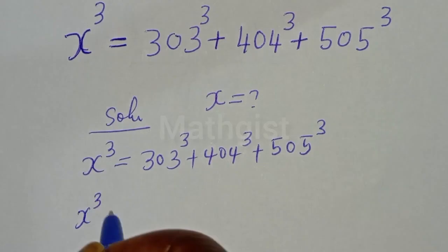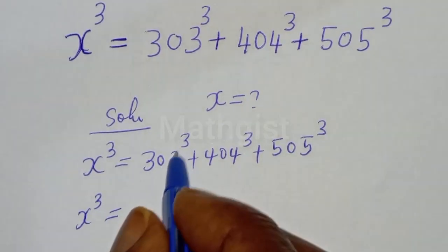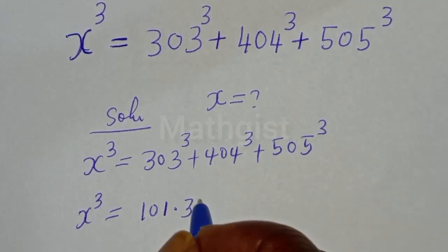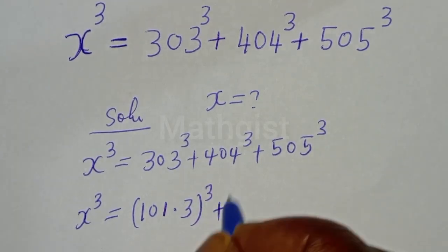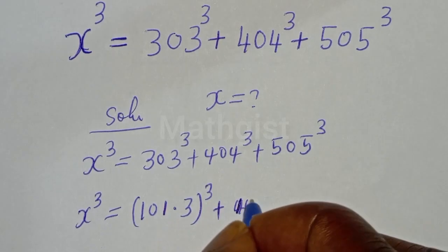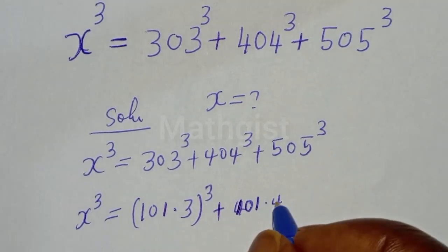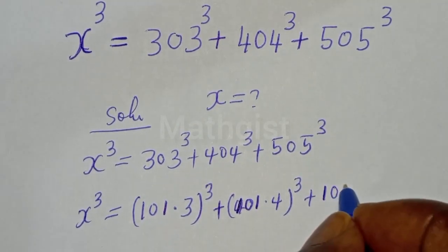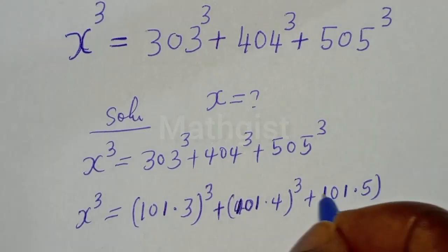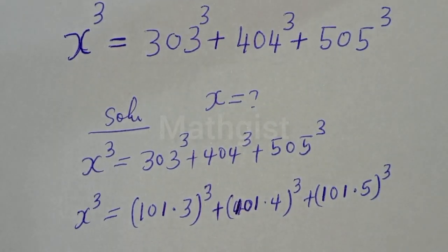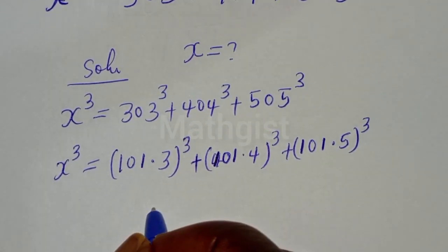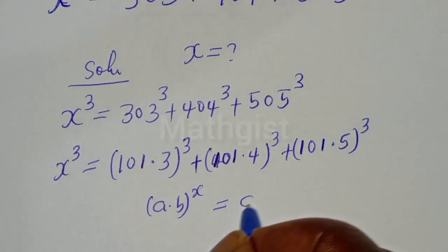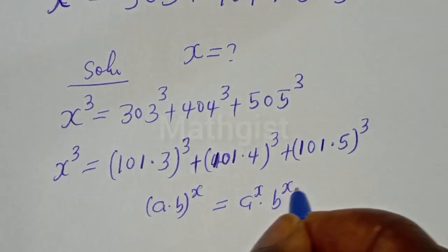S raised to power 3 is equal to: 303 can be written as 101 multiplied by 3, so we have 101 multiplied by 3 to the power of 3, plus 101 multiplied by 4 to the power of 3, plus 101 multiplied by 5 to the power of 3. If you have A multiplied by B to the power of X, this is equal to A raised to power X multiplied by B raised to power X.